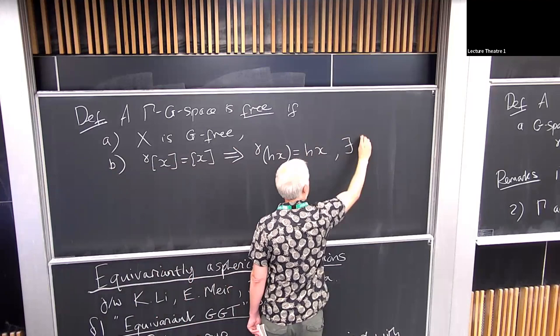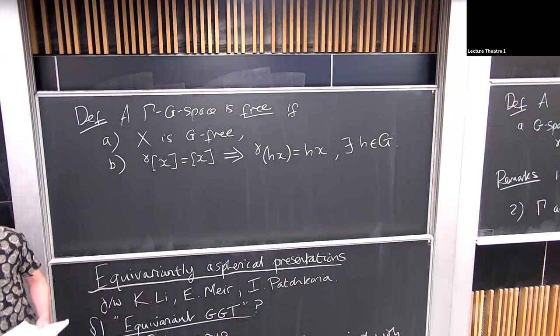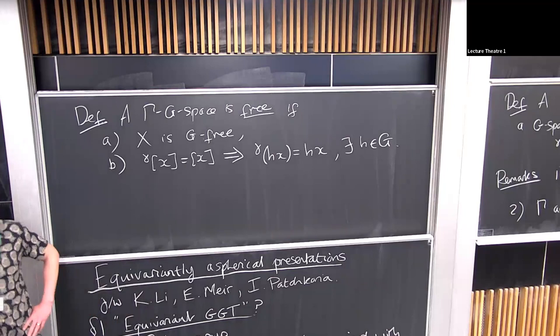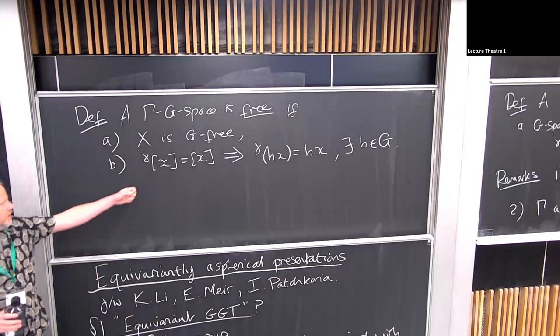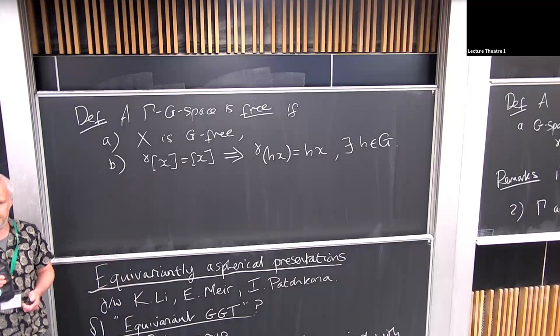So if I represent the orbit by GX, then gamma acting on that is gamma acting on G acting on gamma acting on X. Any questions so far?